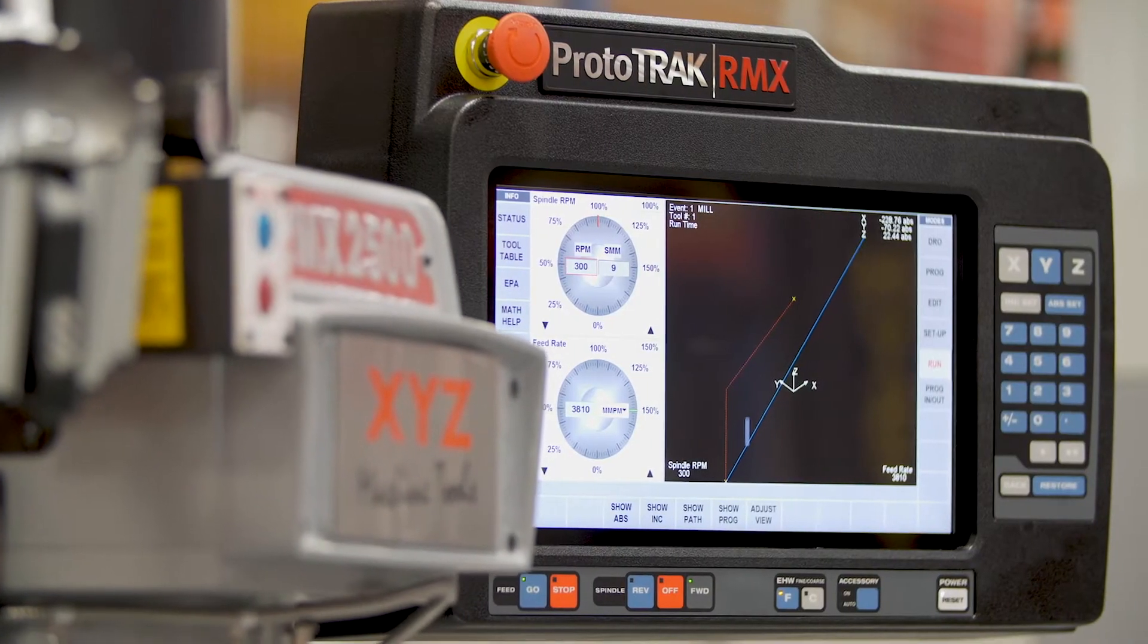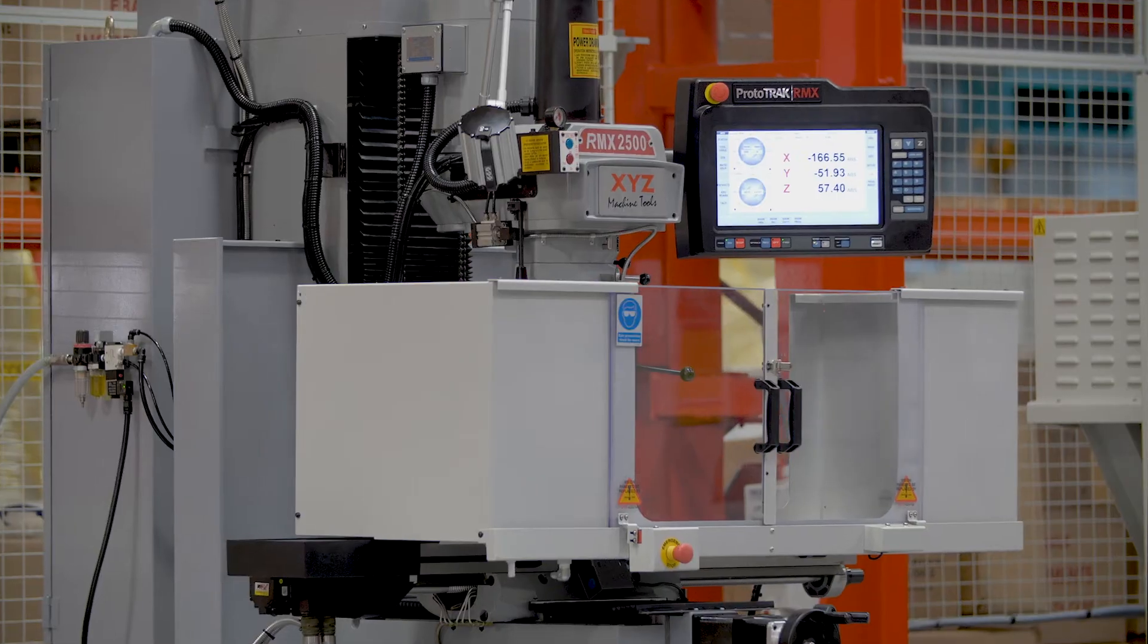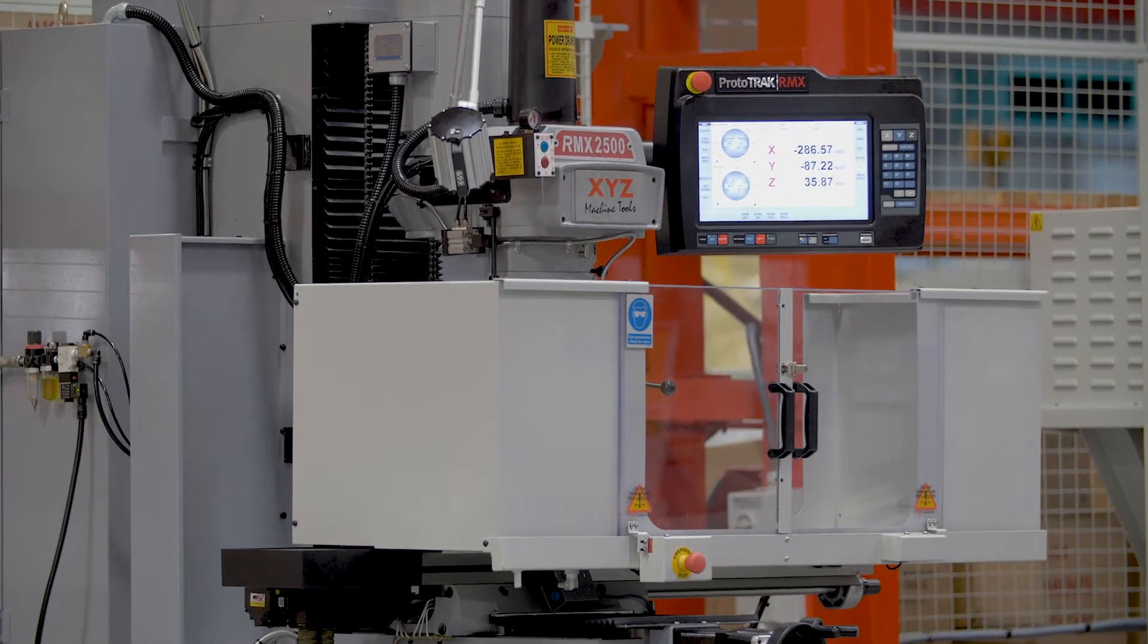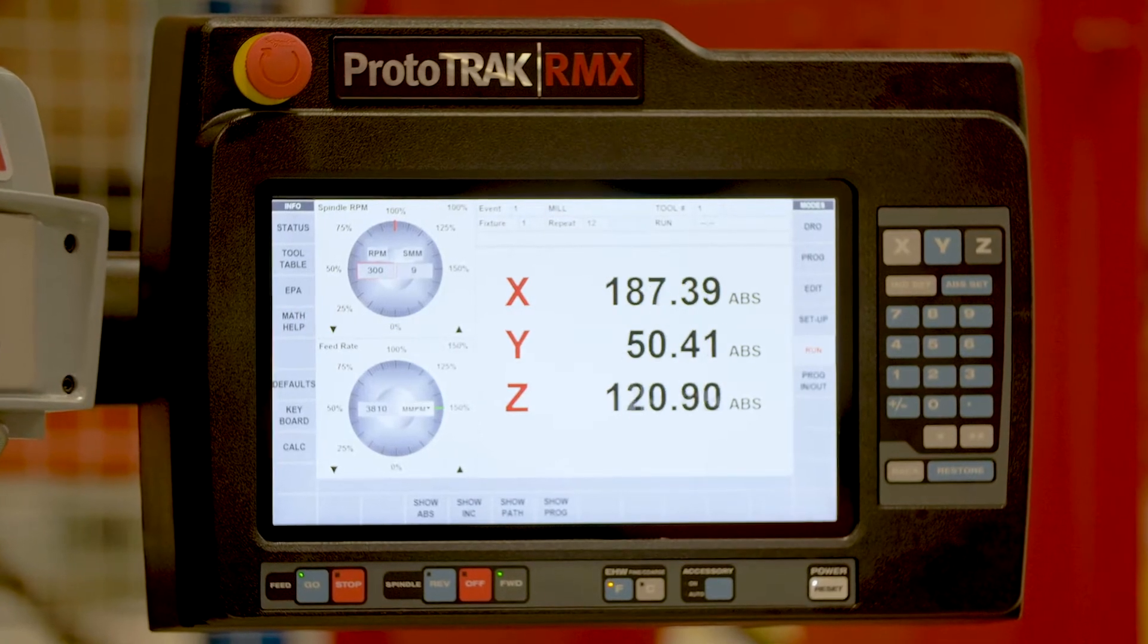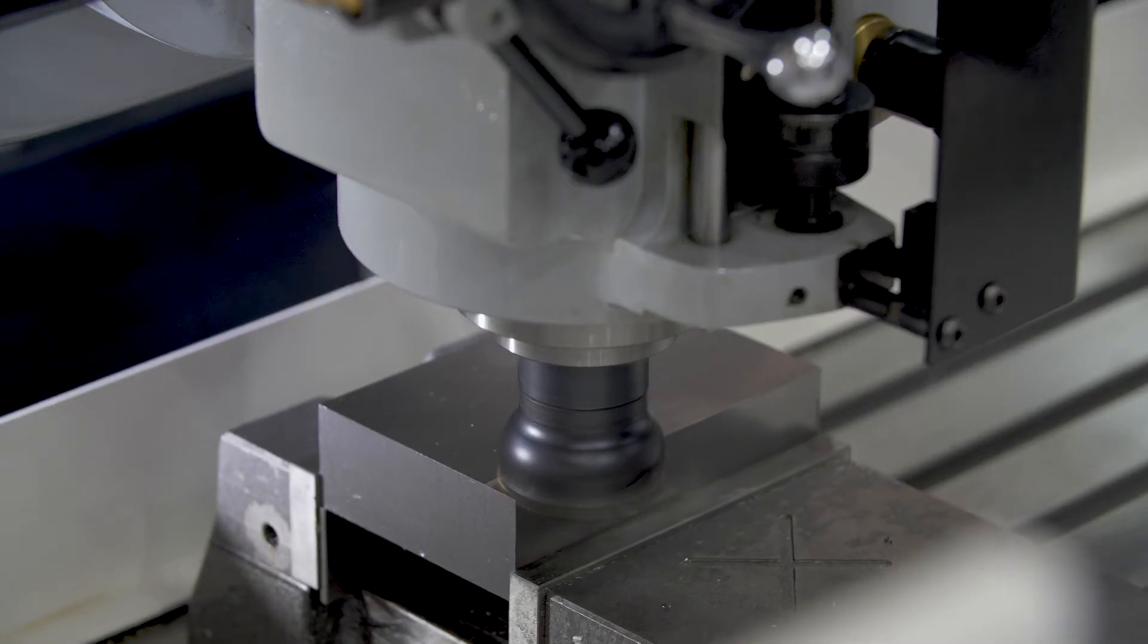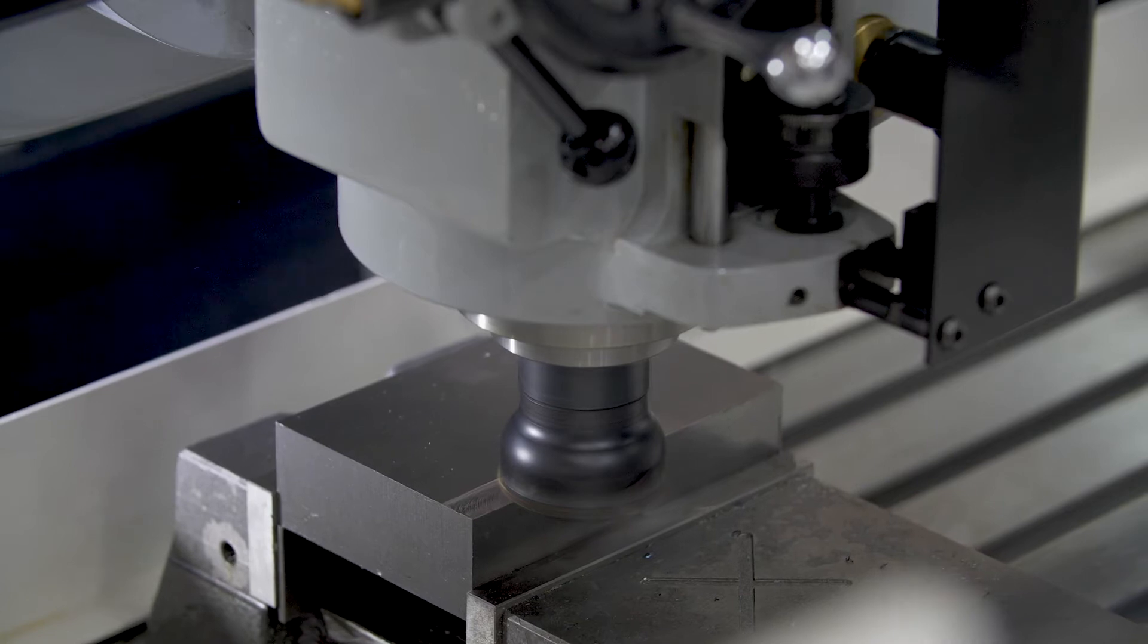When we first introduced Prototrack into the UK in the early 90s, it was an immediate success and revolutionized many machine shops. This manual stroke CNC control gave people the ability to make low volume and one-offs very quickly and easily.